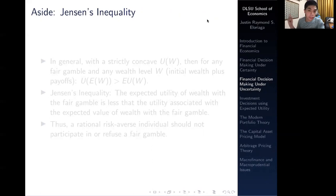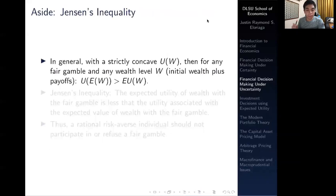The main thing we're going to discuss in this video is this concept called Jensen's inequality. Jensen's inequality is sort of like a proof that people do not necessarily like risk—they like certain things more. In general, with a strictly concave function—note this is a key requirement—with a strictly concave utility function, then for any fair gamble at any wealth level W, the initial wealth plus the payoffs...